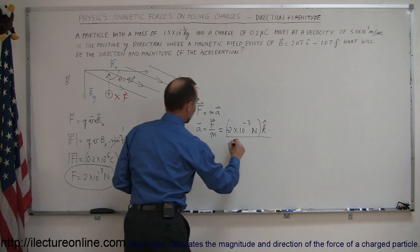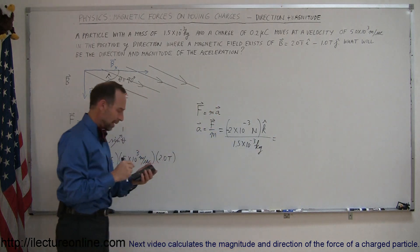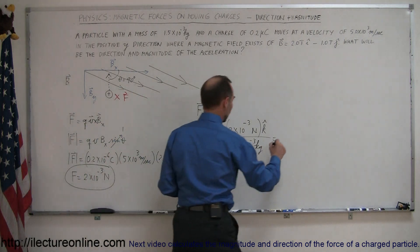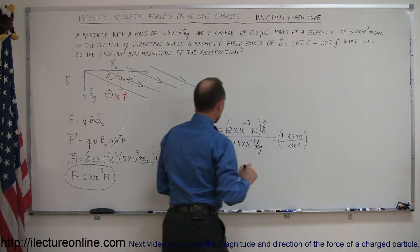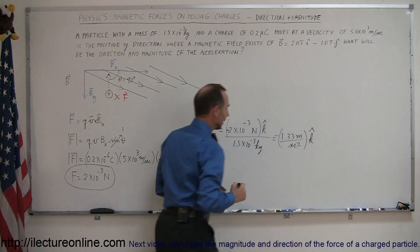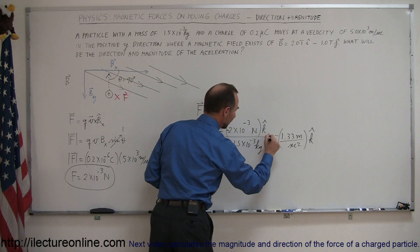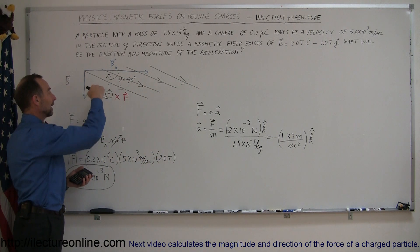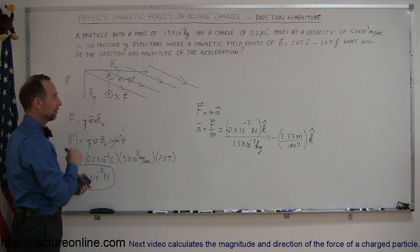Dividing 2 times 10 to the minus 3 by 1.5 times 10 to the minus 3 gives us 1.33 meters per second squared. It's going to be negative because it's going to be in the negative z direction. The positive z direction is out of the board, and the negative z direction is into the board. So the acceleration will be 1.33 meters per second squared in the negative z direction. And that's how you do a problem like that.